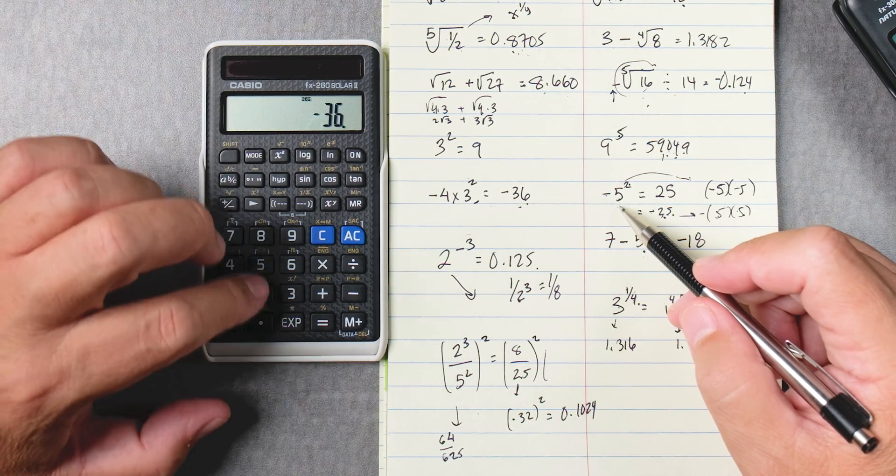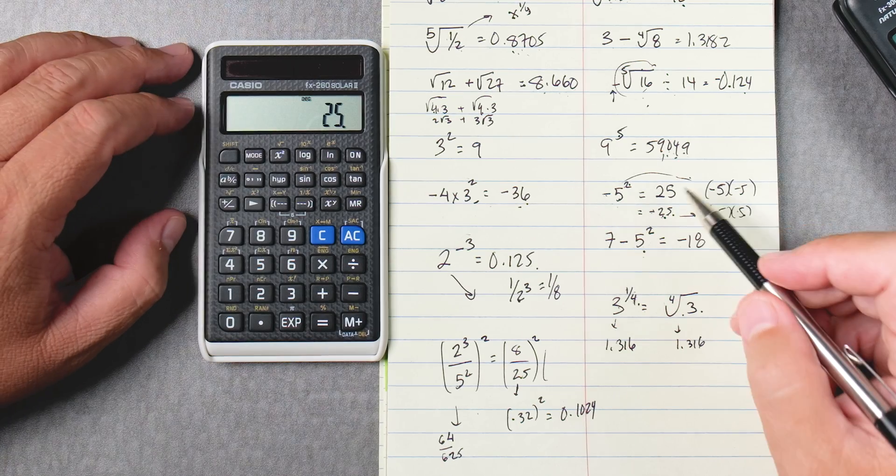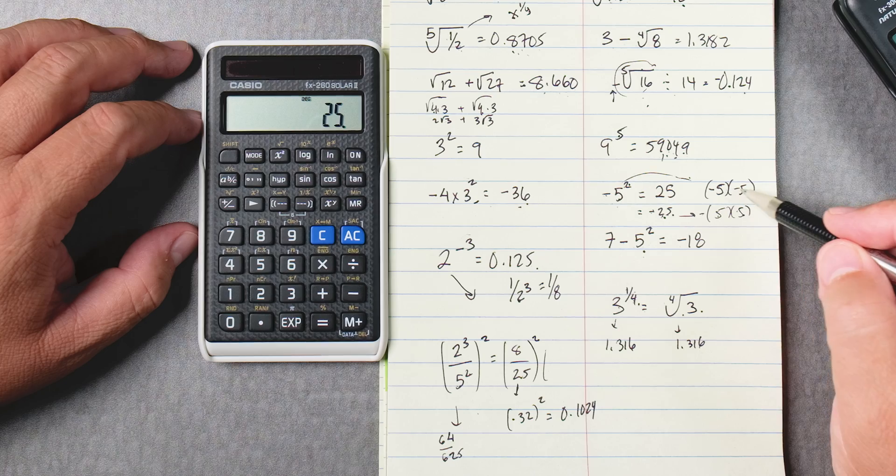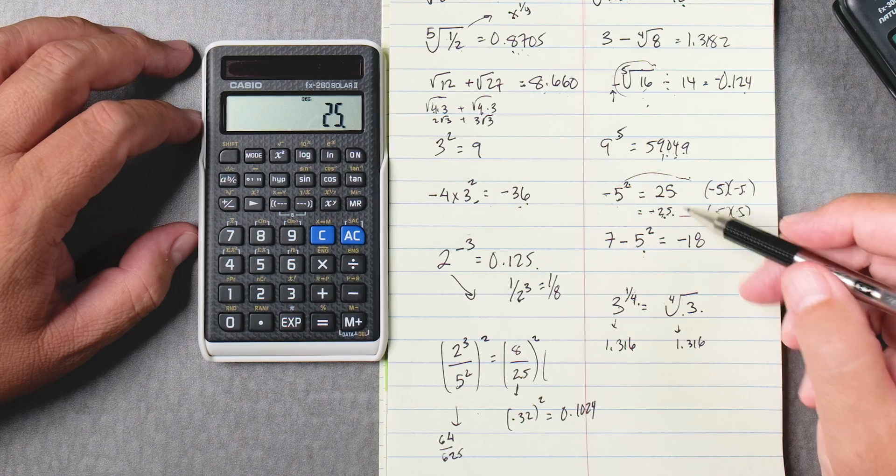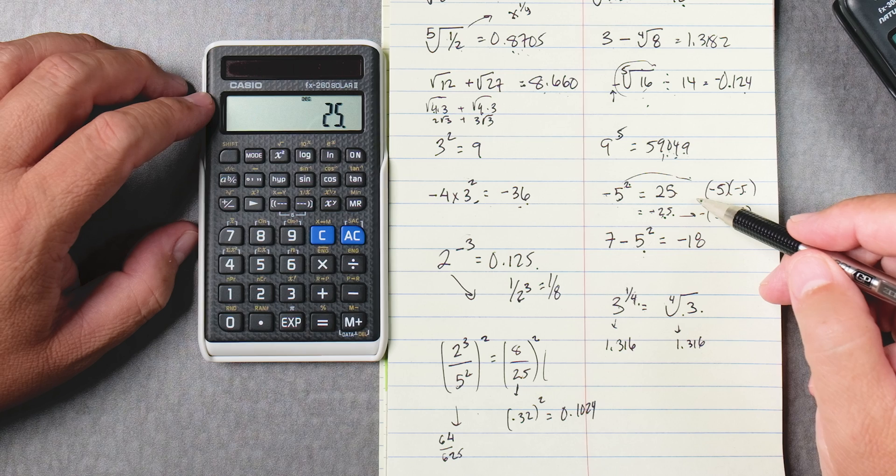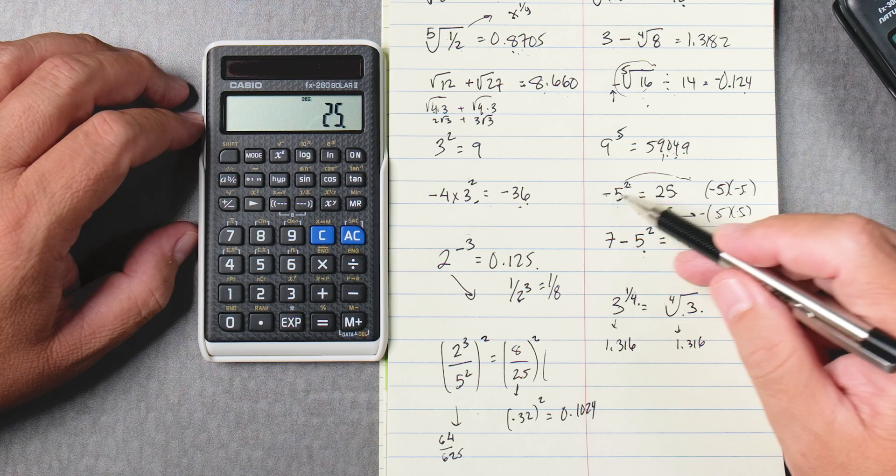This one is going to be five negative and we're going to square. It gives you 25. So what it's doing is it's taking negative five times negative five which is 25. Some calculators will give you negative 25. This is not an algebraic calculator and it won't do that.